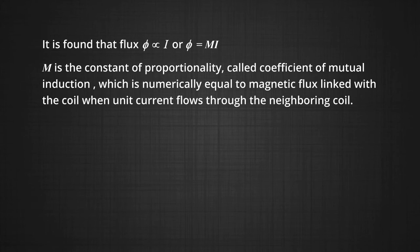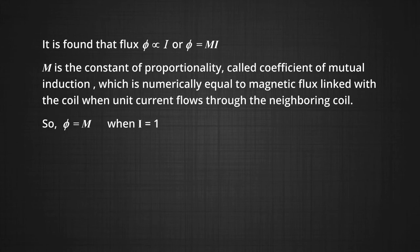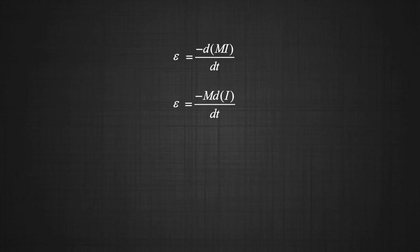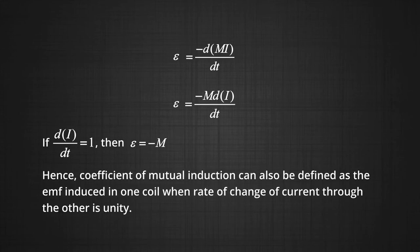Let us find out the coefficient of mutual induction. It is found that the flux phi is proportional to I, or phi equals M into I. M is the constant of proportionality called the coefficient of mutual induction, which is numerically equal to the magnetic flux linked with the coil when unit current flows through the neighbouring coil. So phi equals M when I equals 1. The induced EMF in the neighbouring coil is given by E equals minus d phi by dt, which equals minus d over dt of M into I, equal to minus M di by dt. If di by dt equals 1, then E equals minus M. Hence, the coefficient of mutual induction can also be defined as the EMF induced in one coil when the rate of change of current through the other is unity.